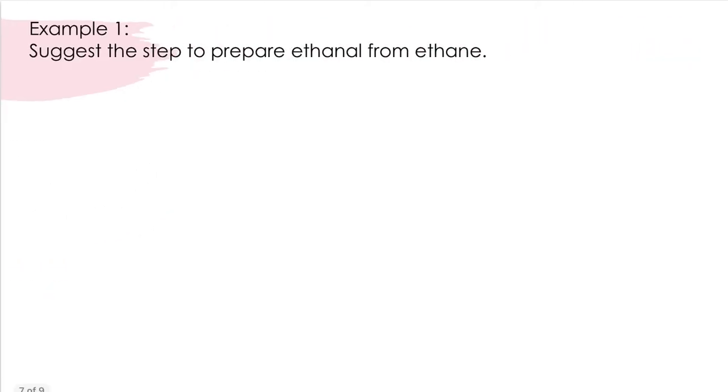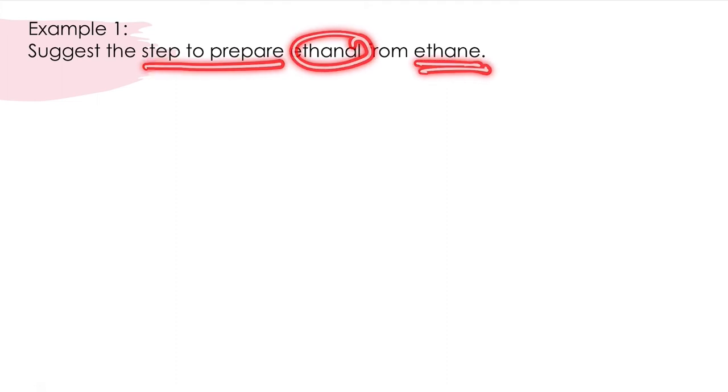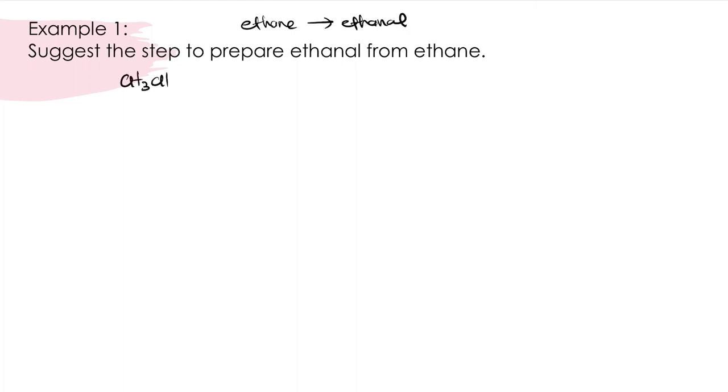Now let's take a look at a few examples. Example 1: Suggest the step to prepare ethanol from ethane. So we have ethane, and we want to prepare ethanol. Ethane is an alkane with molecular formula CH3CH3.